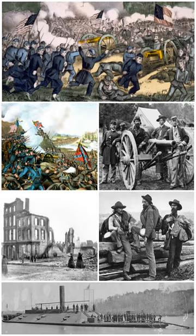Emboldened by 2nd Bull Run, the Confederacy made its first invasion of the North with the Maryland Campaign. General Lee led 45,000 men of the Army of Northern Virginia across the Potomac River into Maryland on September 5. Lincoln then restored Pope's troops to McClellan. McClellan and Lee fought at the Battle of Antietam near Sharpsburg, Maryland, on September 17, 1862, the bloodiest single day in United States military history. Lee's army, checked at last, returned to Virginia before McClellan could destroy it. Antietam is considered a Union victory because it halted Lee's invasion of the North and provided an opportunity for Lincoln to announce his Emancipation Proclamation.